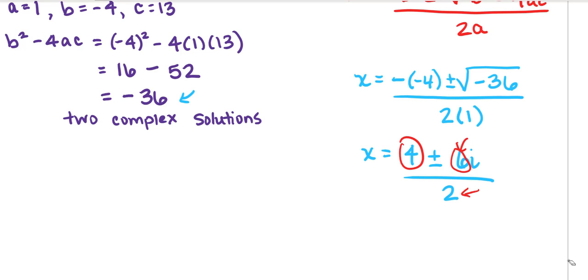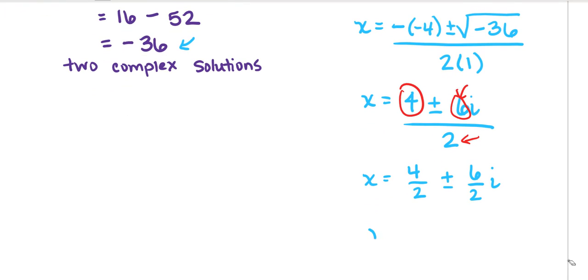So we can split that up there and reduce our answer. So 4 divided by 2 plus or minus 6 divided by 2i. And that would be x equals 2 plus or minus 3i.